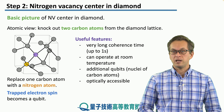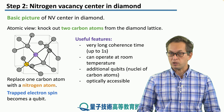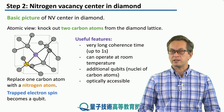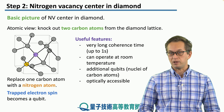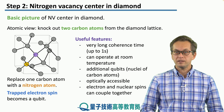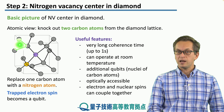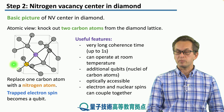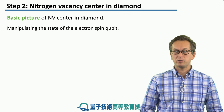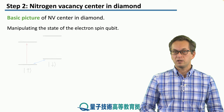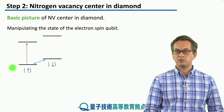The NV center in diamond is optically accessible. We can control it with light, we can also excite it, and then when it de-excites it emits photons which we can collect. We can also engineer interactions between the electron spin and any of the nuclear spins present in the lattice. So how do we manipulate the state of the electron spin qubit?